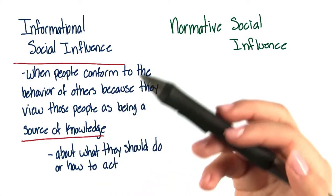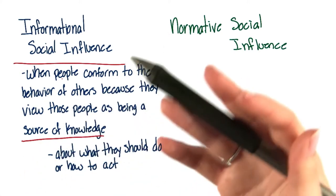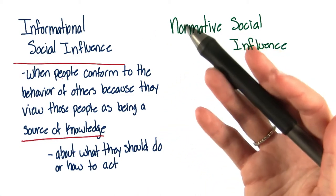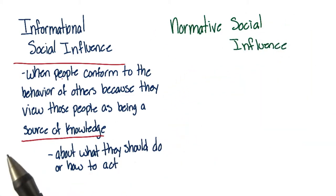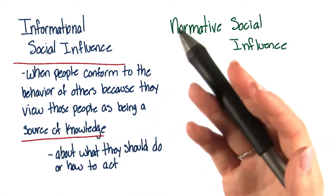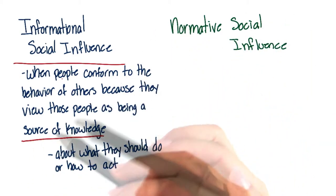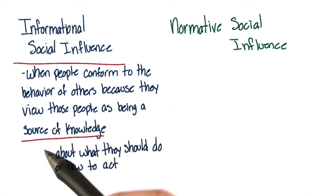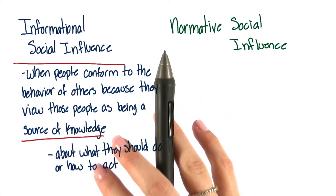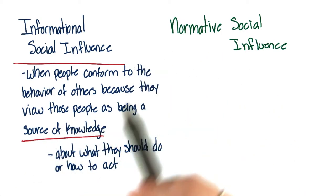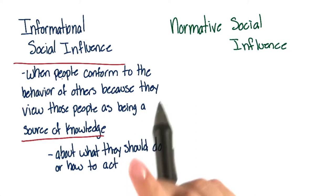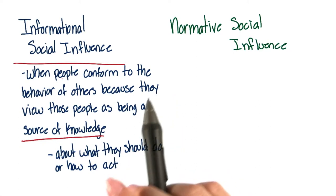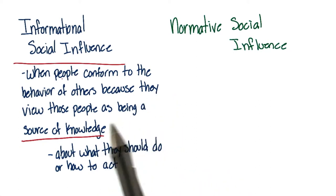Do people take their food off their trays to eat? Do they keep their food on their trays? Do they mostly sit outside or sit inside? This usually happens in situations that are ambiguous or in a novel situation — that's when we're most likely to see informational social influence occur.